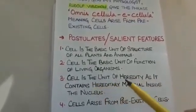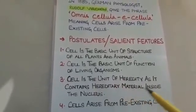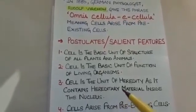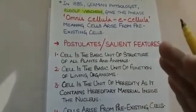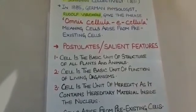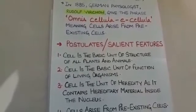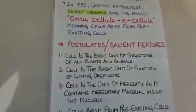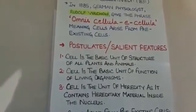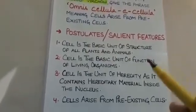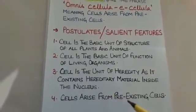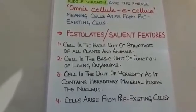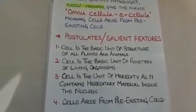The third postulate is: cell is the unit of heredity, as it contains hereditary material inside the nucleus. This hereditary material is DNA, that is, deoxyribonucleic acid. When a cell divides and gives rise to new cells, some part of this hereditary material is transferred to the new cell, so characteristics pass on from one generation to another. The fourth postulate, added by Rudolf Virchow, is: cells arise from pre-existing cells. It means when a living cell divides, it gives rise to new cells that are made from a cell already existing in nature.